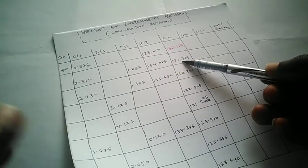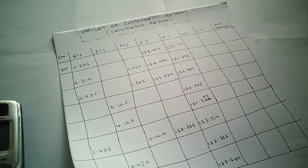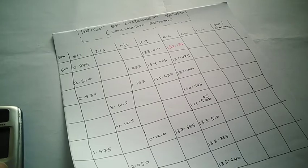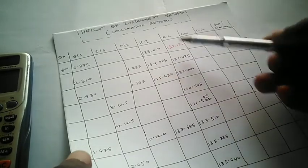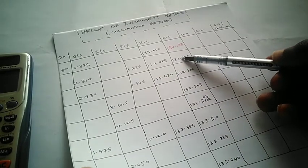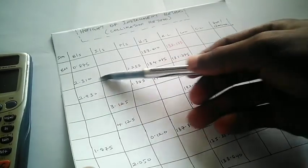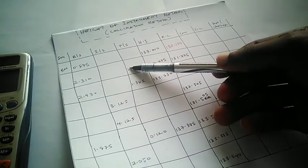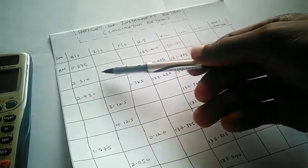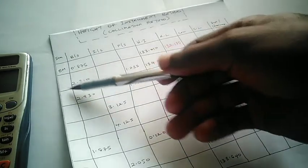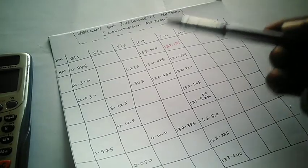Now when you look at this particular line, you will see that on this point there were two observations — a foresight and a backsight. This definitely means there was a turning point. The instrument position was moved because there was a foresight (the last observation before you move the instrument) and a backsight (the first observation when you set up the instrument again).